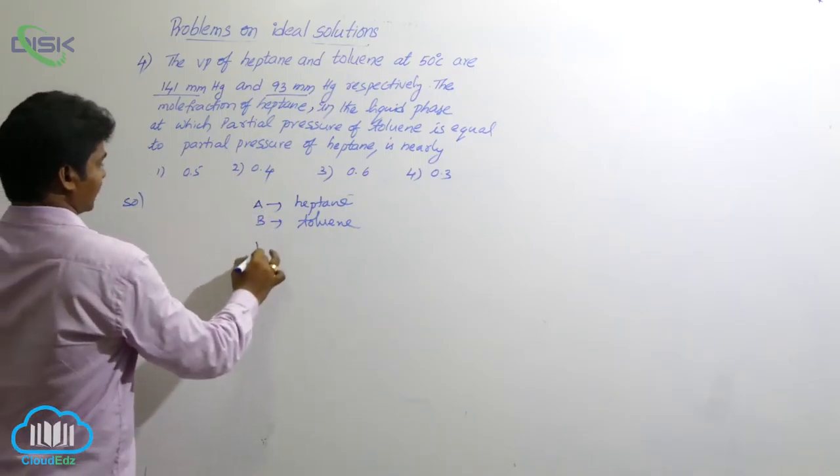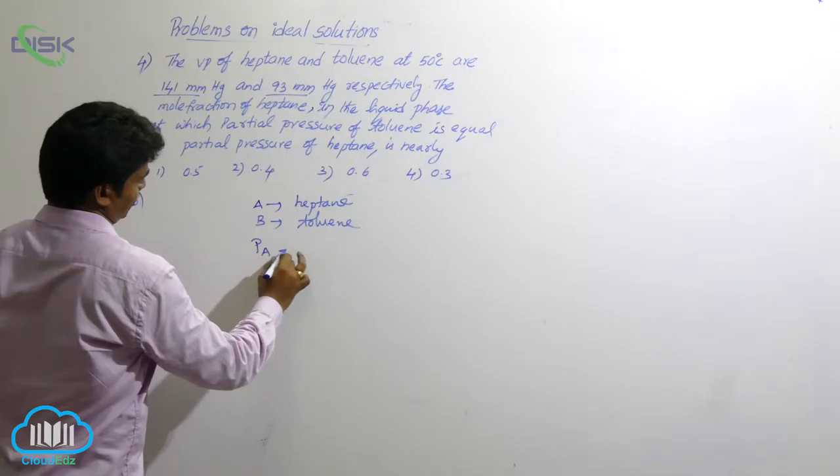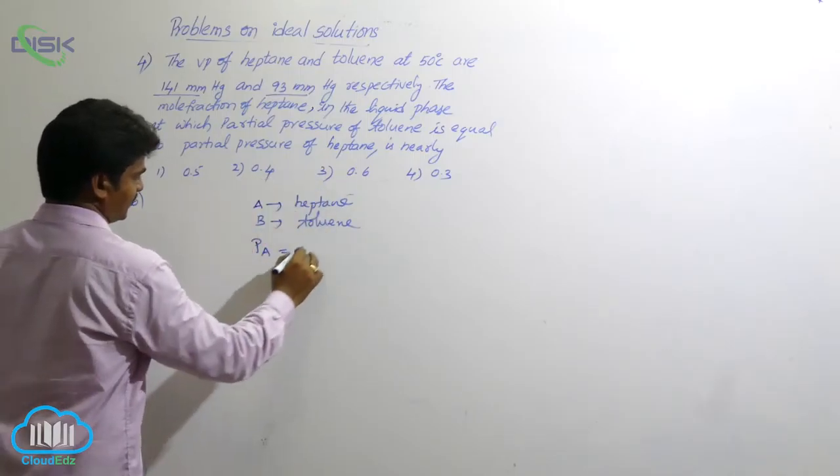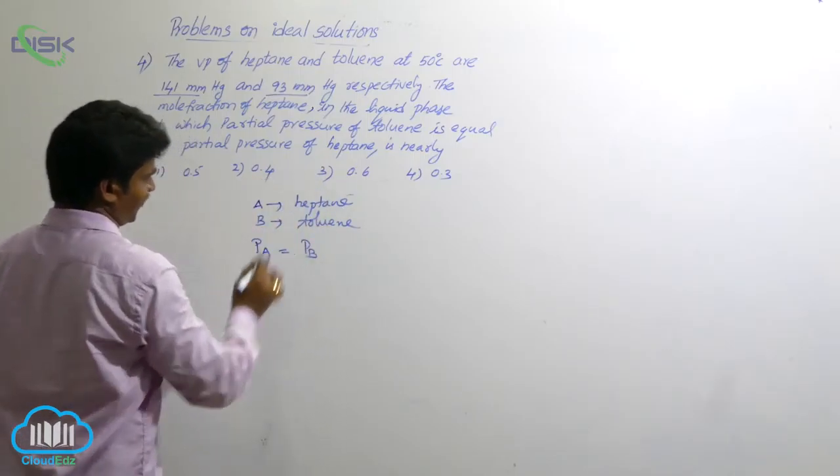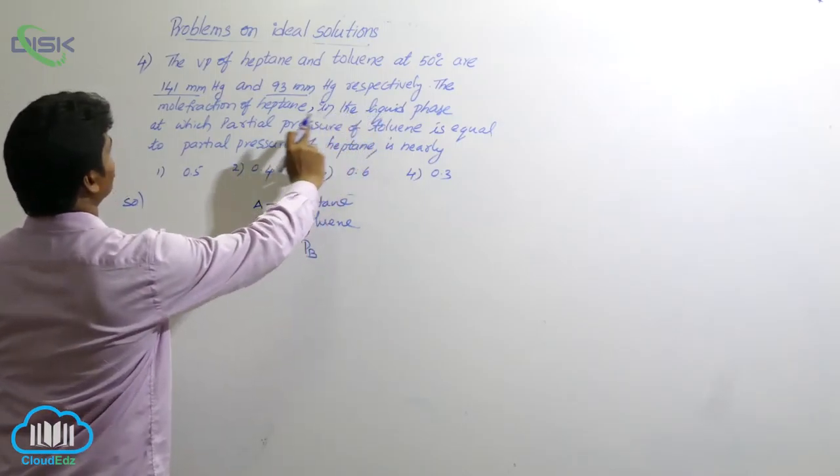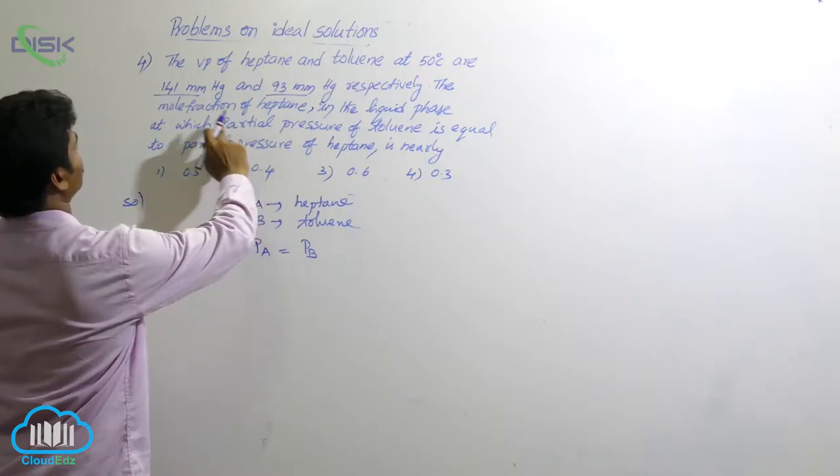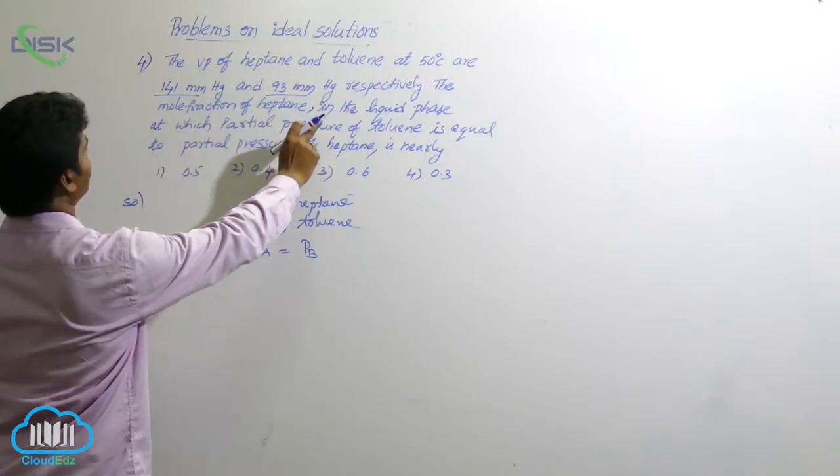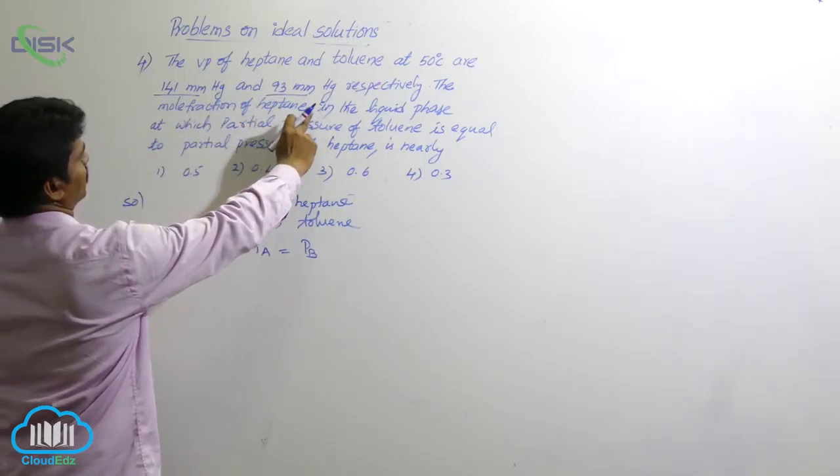Now, given that partial pressure of A, that means partial pressure of heptane, is equal to partial pressure of toluene. So here, liquid phase composition, we have to find out. Mole fraction of heptane in the liquid phase, we have to find out.